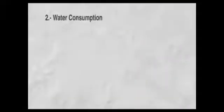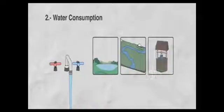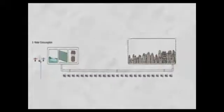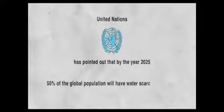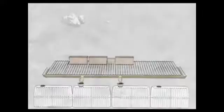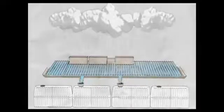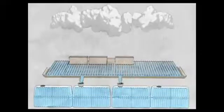Two, water consumption. The water you normally get from the grid is pumped from lakes, rivers, and underground water, often travelling long distances for human usage, consuming a lot of energy. United Nations has pointed out that by the year 2025, 50% of the global population will have water scarcity problems. With earthships, you harvest your own water, so it's a safe net, plus you help our planet by reducing global warming and water scarcity.